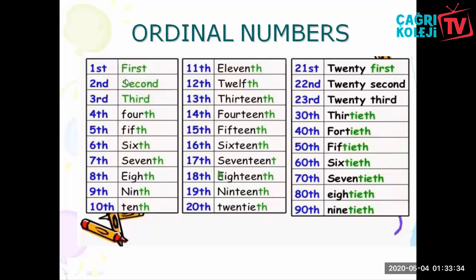When we look at 1st, 2nd, and 3rd — these three numbers are different from the others. We use -st, -nd, and -rd for these numbers. But for the others we use -th: 4th, 5th, 6th, 7th, 8th, 15th, 16th.